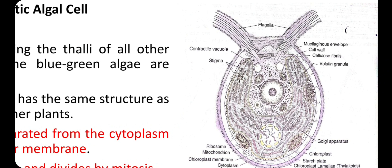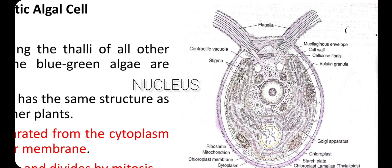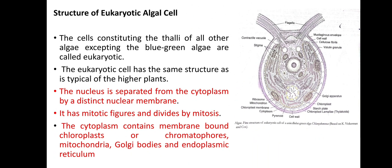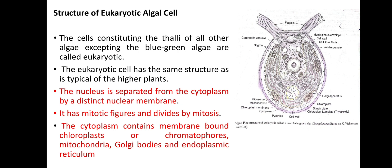As you can see in this diagram, a distinct nucleus is present in the eukaryotic algal cell, which separates the nucleoplasm from the cytoplasm. So a distinct nucleus with a nuclear membrane is present. Then membrane-bound organelles like mitochondria, chloroplast, endoplasmic reticulum, and Golgi bodies are present.